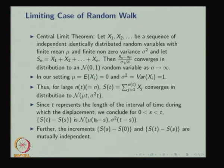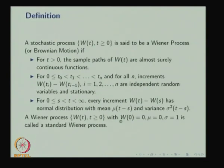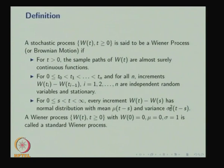A stochastic process is said to be a Wiener process or Brownian motion if it satisfies three conditions: (1) for t > 0, the sample paths W(t) are almost surely continuous functions; (2) the increments are independent and stationary for all n; (3) every increment W(t) − W(s) has a normal distribution with mean μ(t − s) and variance σ²(t − s). A Wiener process with W(0) = 0, μ = 0, and σ² = 1 is called the standard Wiener process or standard Brownian motion.